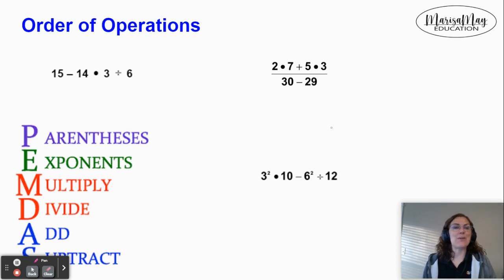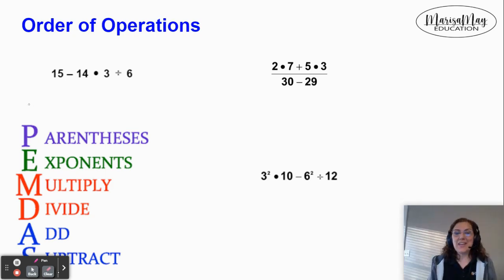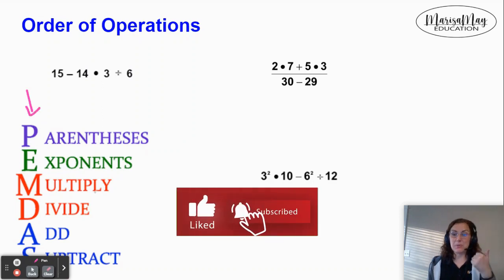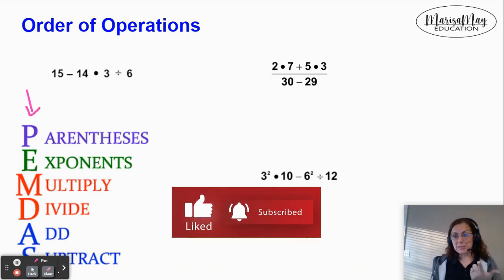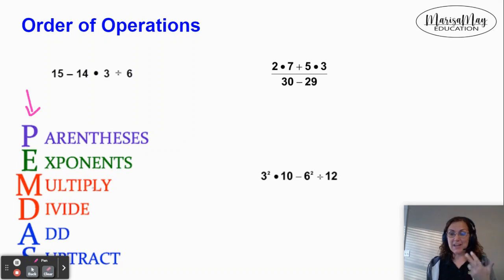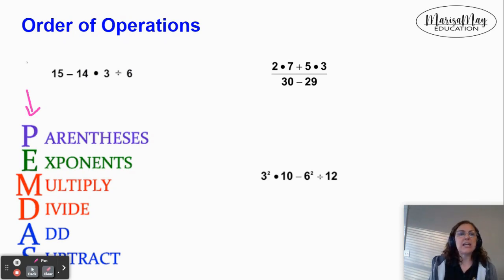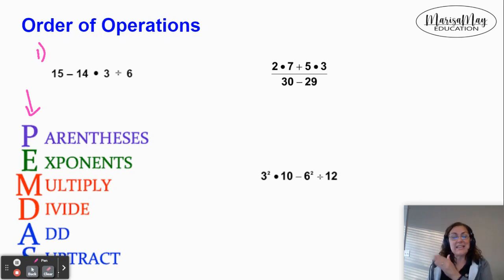Let's jump right into the order of operations. Over here on the left, I have put the order of operations beginning with parentheses, then exponents, then multiply or divide, then add or subtract. You may have learned the phrase PEMDAS before as a way to help you remember these steps. Let's take a look at problem number one. We're going to look through — do we see any parentheses? I don't, so I get to skip that step.